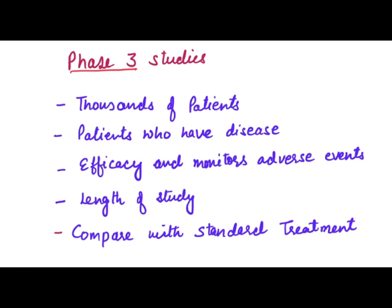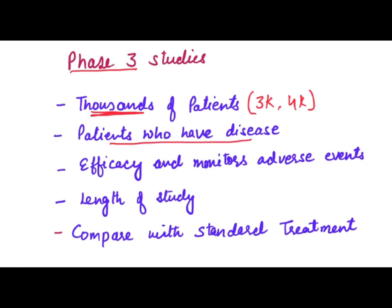These studies are of course done in thousands of patients — maybe three thousand, four thousand — and this number can go up to twenty thousand. The number of patients depends totally on the study design, but it is a large population in the thousands. In phase two, patients are in the hundreds, a very small population, but here the population size is quite high. Patients who have the actual disease and indication are involved, because you want to see if the new treatment is really working.